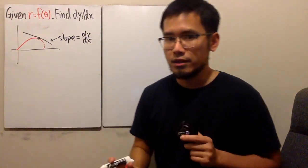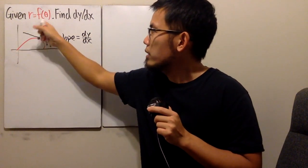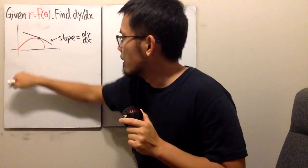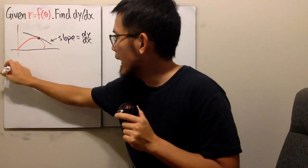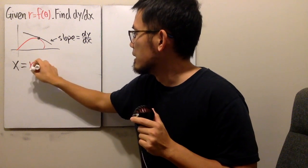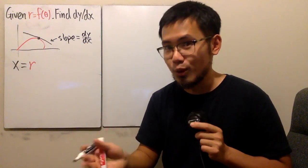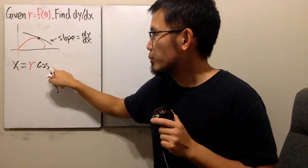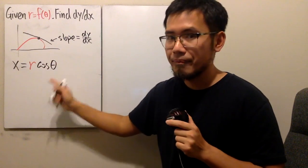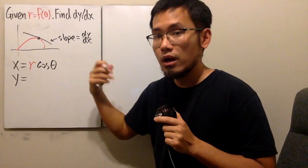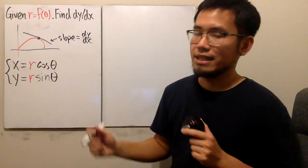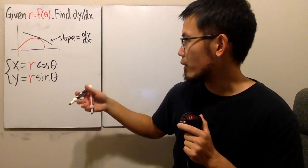To deal with the polar equation, we can always go back to the parametric equation first. In the previous video, I showed that if we have x, we can write this as r times cosine theta — because in the polar situation, we are in the theta world, so we use the parameter theta. And then y is equal to r times sine theta. So we can always go back to the parametric equation for the calculus part as well.